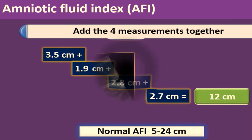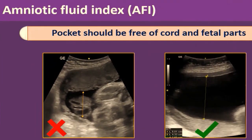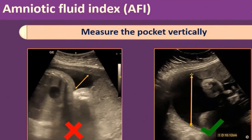There are important prerequisites for AFI assessment. First, the pocket must be free of cord and fetal parts — a pocket containing fetal parts is incorrect measurement. Second, measure the pocket vertically — taking an oblique view is incorrect. The vertical pocket measurement is the correct approach.